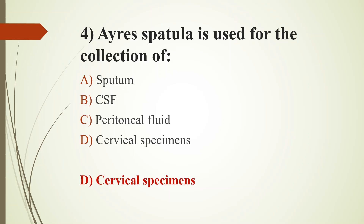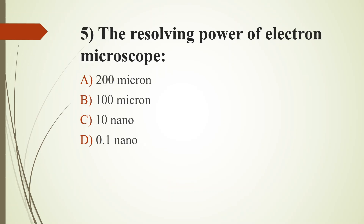Fifth question: The resolving power of electron microscope. Option A: 200 micron. Option B: 100 micron. Option C: 10 nano. Option D: 0.1 nano. Answer is Option D, 0.1 nanometer. The resolving power of an objective lens is measured by its ability to differentiate two lines or points in an object. For light microscope, 200 nanometers is the resolving power.